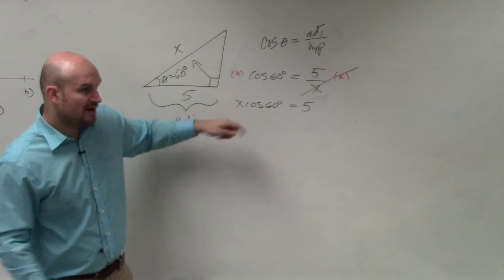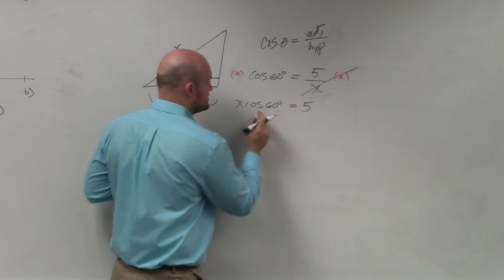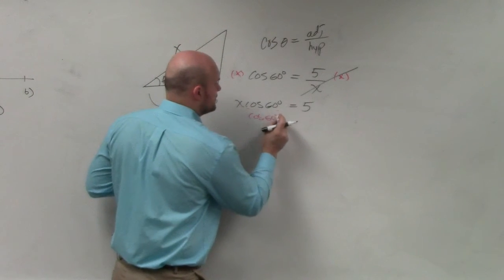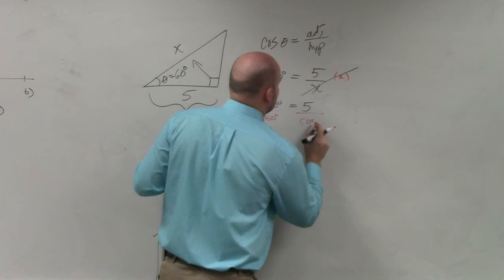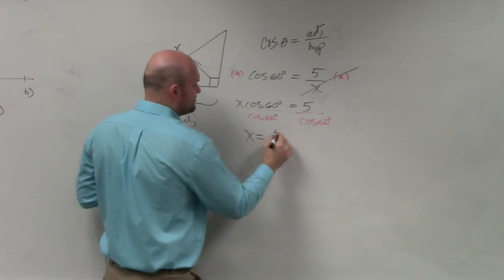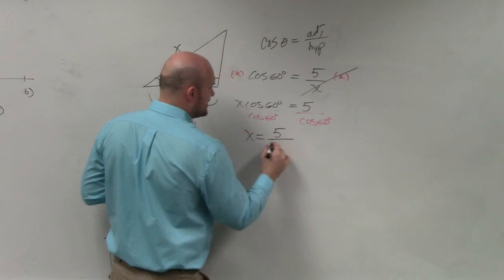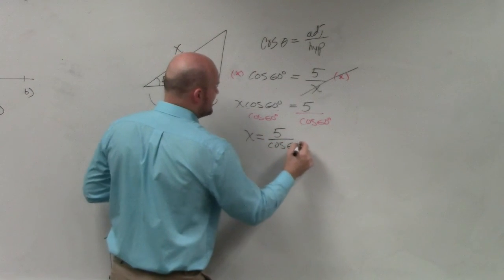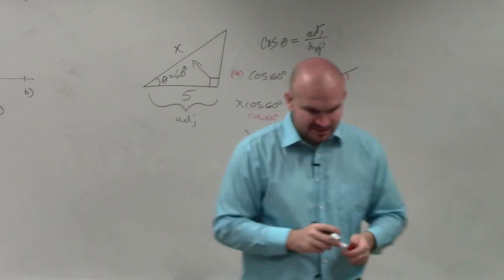Then I need to solve for x, so I need to undo multiplying by cosine of 60 degrees. And I would not convert any decimals until the very end. So I would not evaluate for cosine of 60 until the very end.